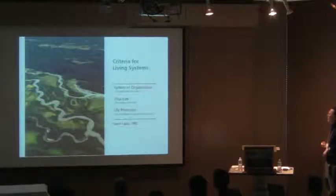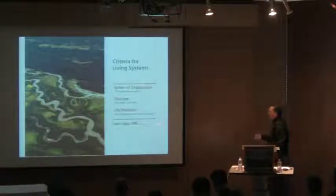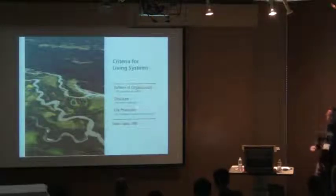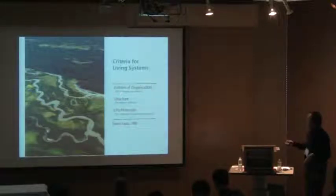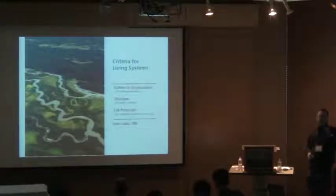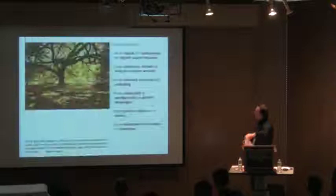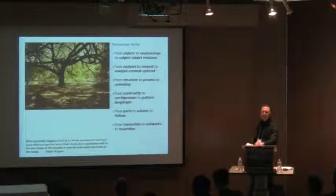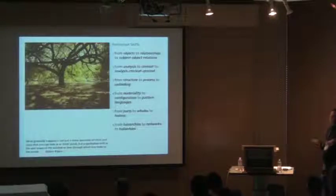Here's Capra's criteria for living systems: you have to have patterns of organization, you have to have structure, and you have to have life process. Life process is what makes it go — the things flowing and changing. Structure is the object nature — what's guiding the way everything is flowing, the hardware. And the pattern of organization, which is geometry, is also the order of things like networks. There are, I think, six perceptual shifts necessary for anybody interested in designing in a world where the landscape is living and we're going to integrate with that living landscape.